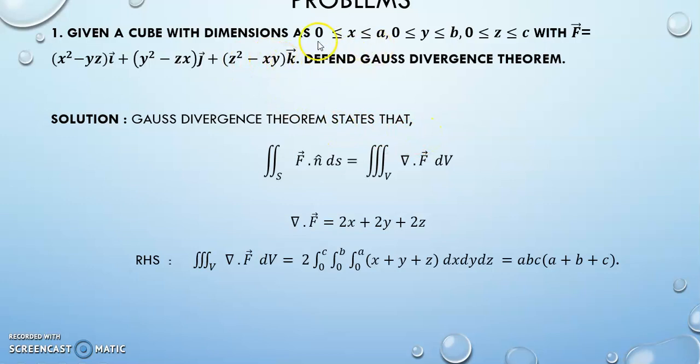Given a cube with dimensions, x is varying between 0 to a and y is varying between 0 to b and z is varying between 0 to c with F vector equal to (x² - yz)i + (y² - zx)j + (z² - xy)k.